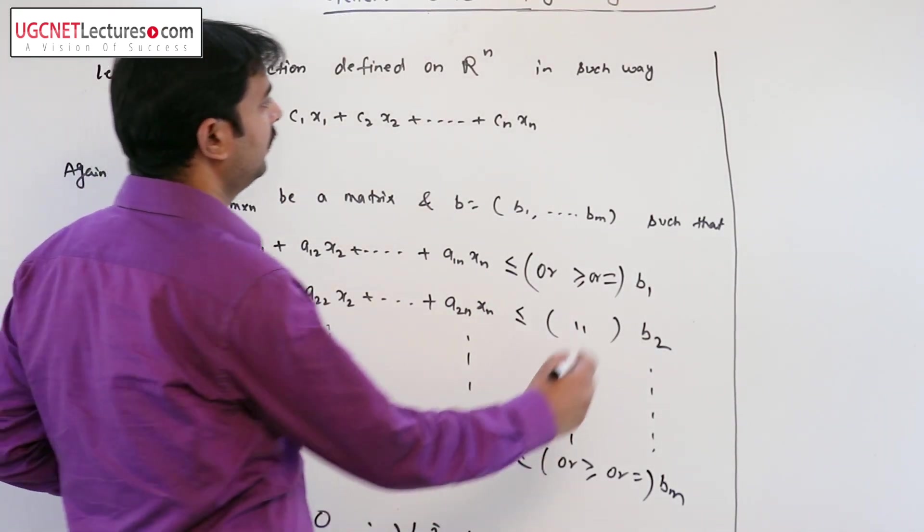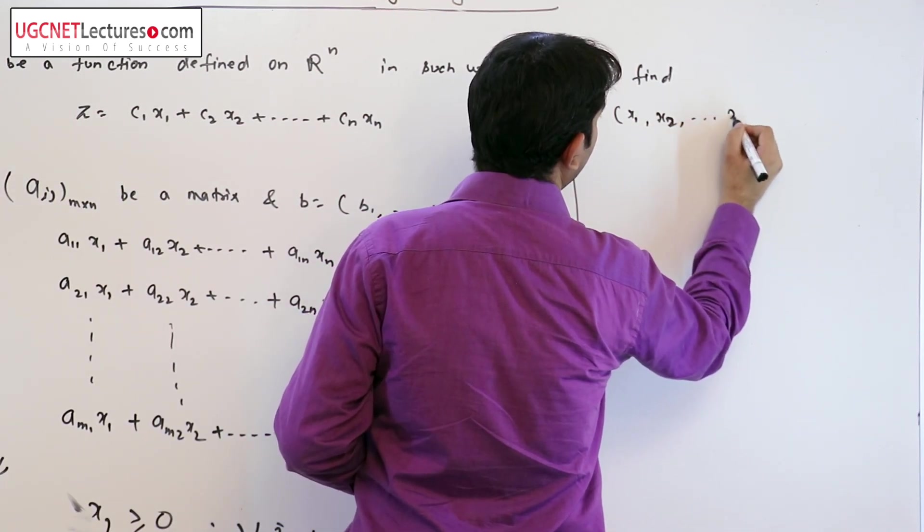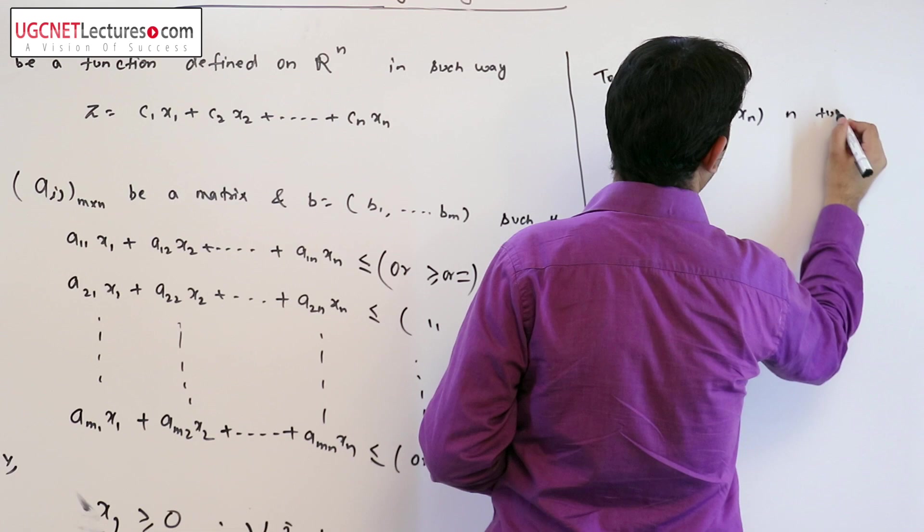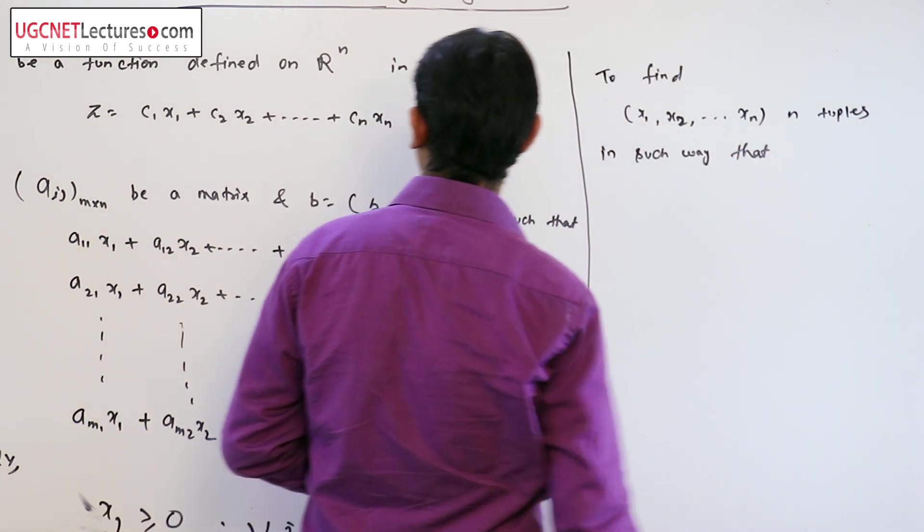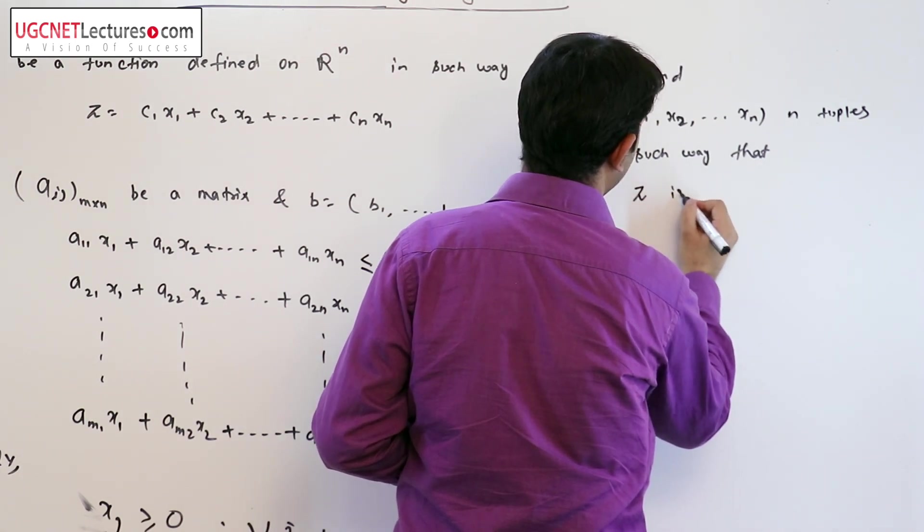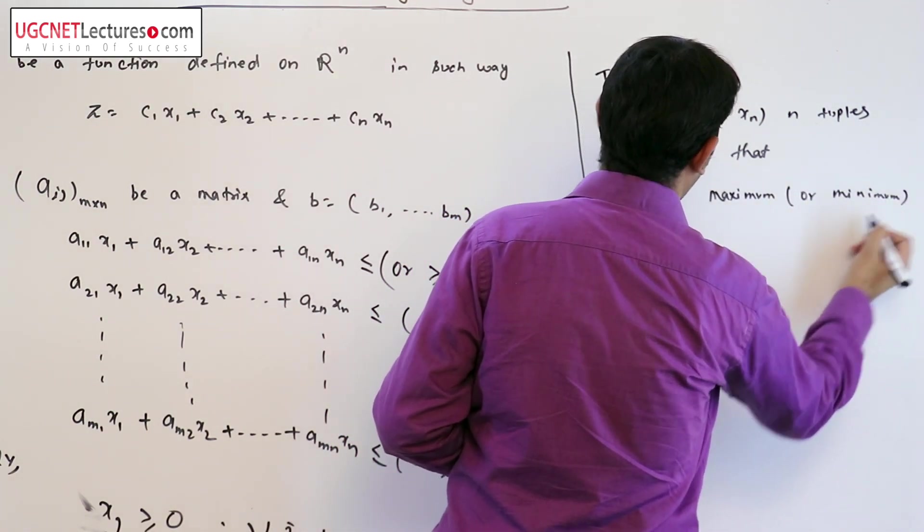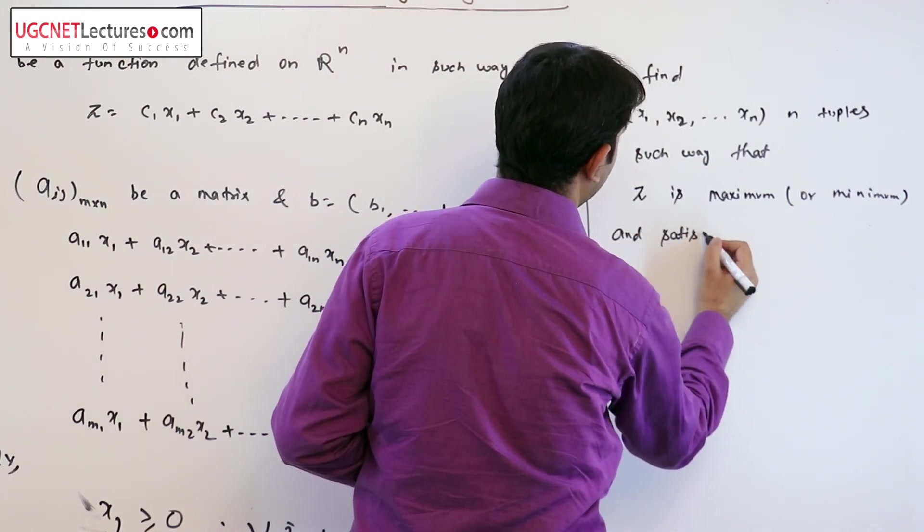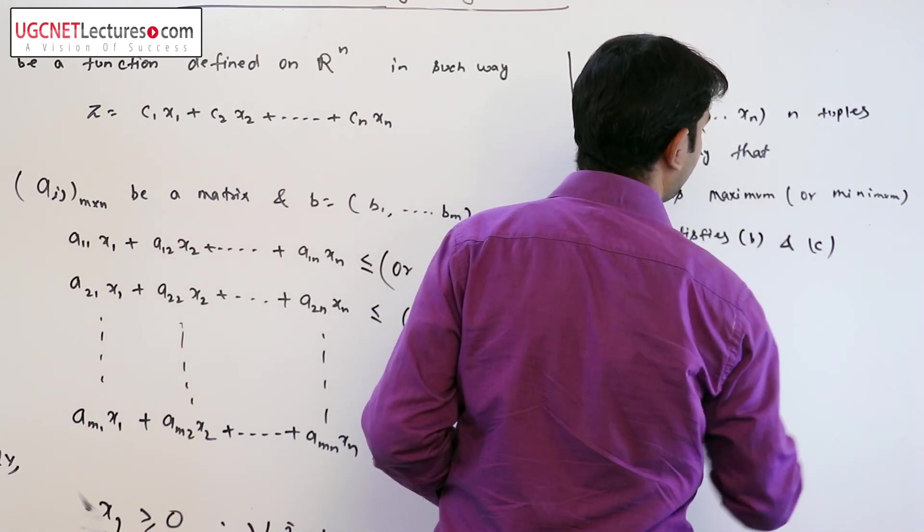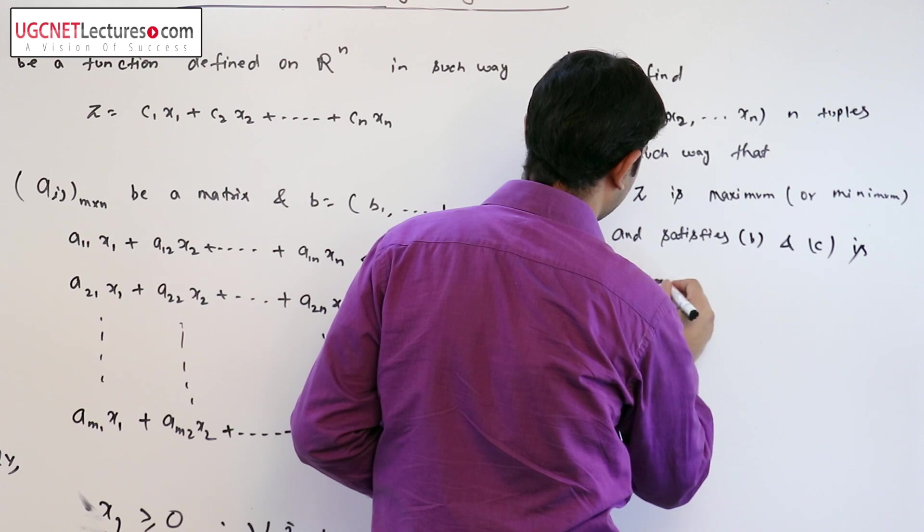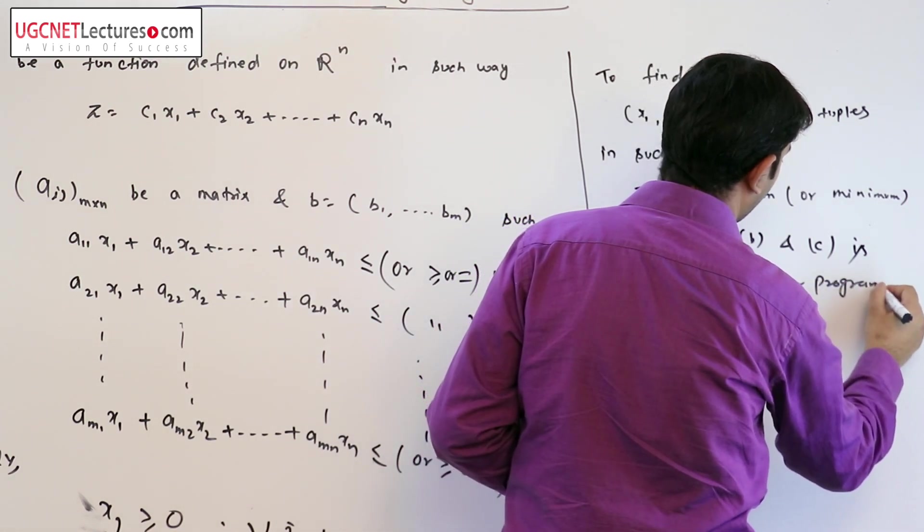To find n-tuples in such a way that the following function z is maximum or minimum and satisfies the constraints b and c is called general linear programming problem.